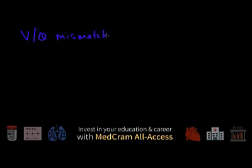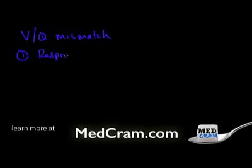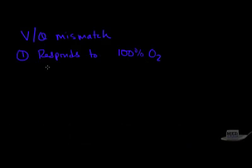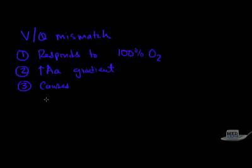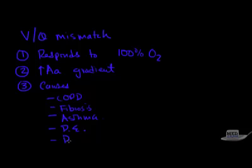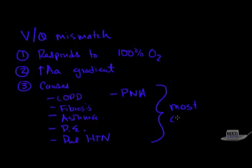Let's summarize VQ mismatch. Number one: it responds to 100 percent O2. Remember the only one that did not respond to 100 percent O2 was shunting. Number two: you have an increased AA gradient. Number three: the causes. Here they are: COPD, fibrosis, asthma, pulmonary embolism, pulmonary hypertension, and pneumonia. As a result of all of these causes, it is the most common form of hypoxemia.